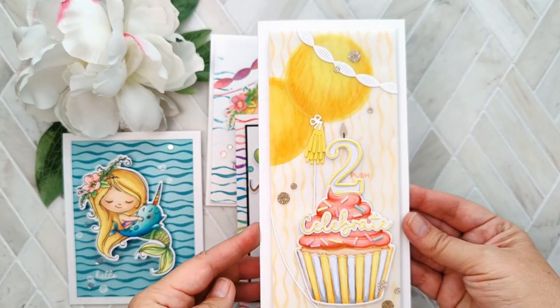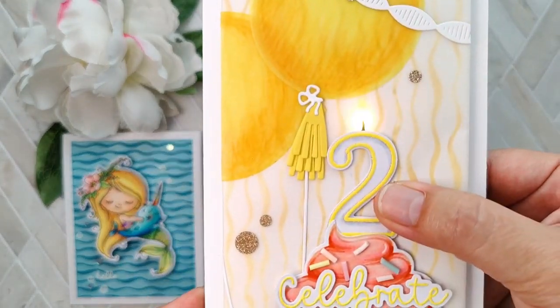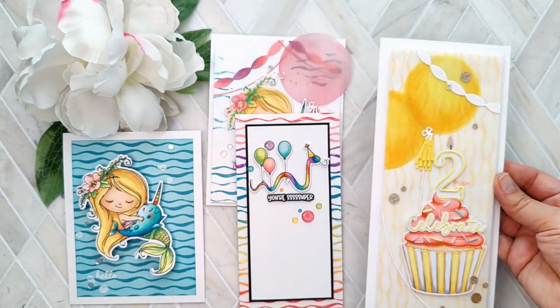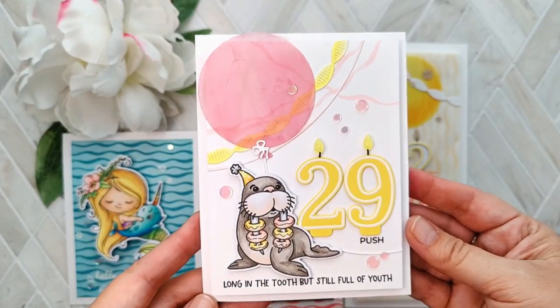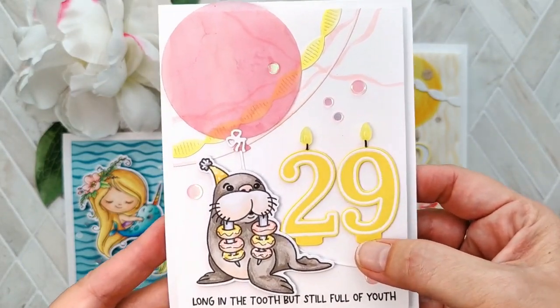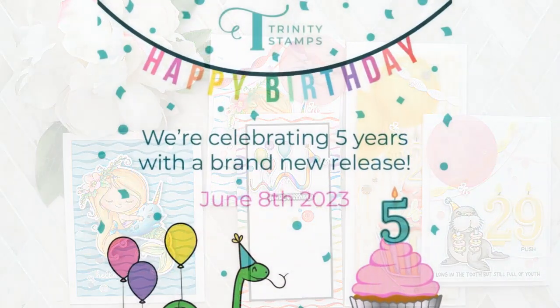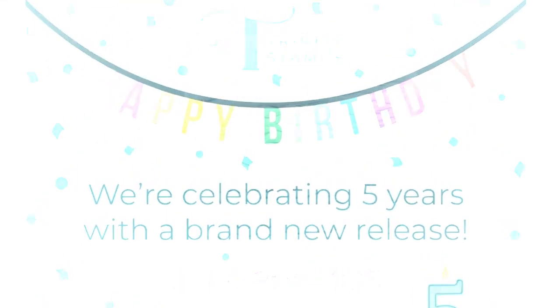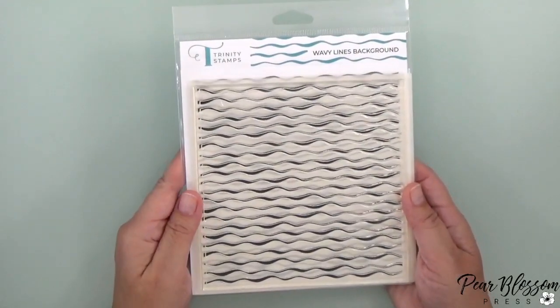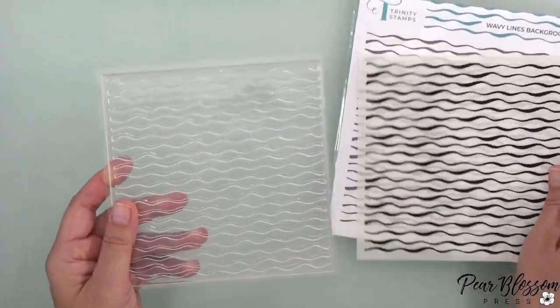They allow you to create lots of different backgrounds without having to be perfect, and they don't have to match up exactly. So as you're watching the video, ask yourself if you already have something that'll work. If not, you can head on over to Trinity Stamps and check out the new wavy line stamp along with their whole big birthday release. They have a fantastic new release because they're celebrating their fifth anniversary.